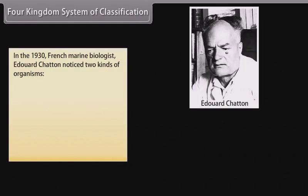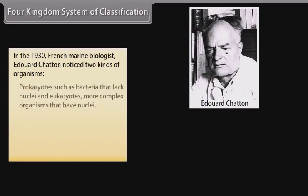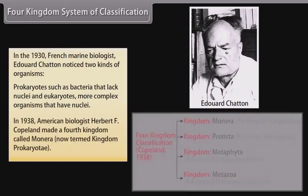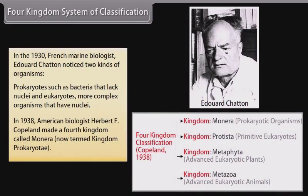Four kingdom system of classification: in the 1930s, French marine biologist Edward Chatton noticed two kinds of organisms — prokaryotes, such as bacteria that lack nuclei, and eukaryotes, more complex organisms that have nuclei. In 1938, American biologist Herbert F. Copeland made a fourth kingdom called Monera, now termed kingdom Prokaryote.